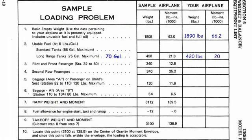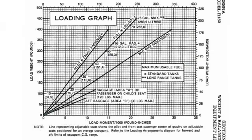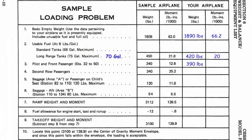Next we add the weight of the pilot and co-pilot. I'm flying with a co-pilot and together we weigh 390 pounds. Going back to the loading graph, we find the pilot and co-pilot line, follow 390 pounds until it hits the line, and go down — that gives us a moment of 14.6. So our moment for 390 pounds for the pilot and co-pilot is 14.6.